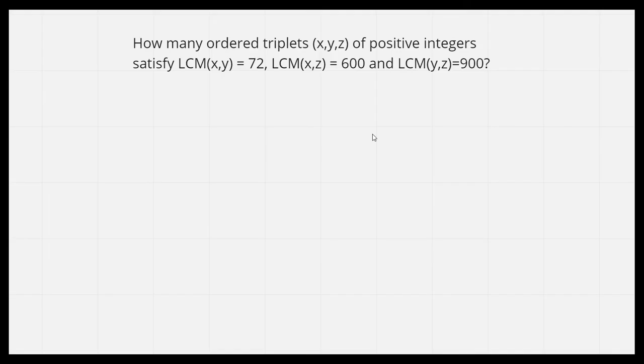Welcome back to the channel. The question that we are going to discuss today is how many ordered triplets (x,y,z) of positive integers satisfy LCM(x,y) = 72, LCM(x,z) = 600, and LCM(y,z) = 900.